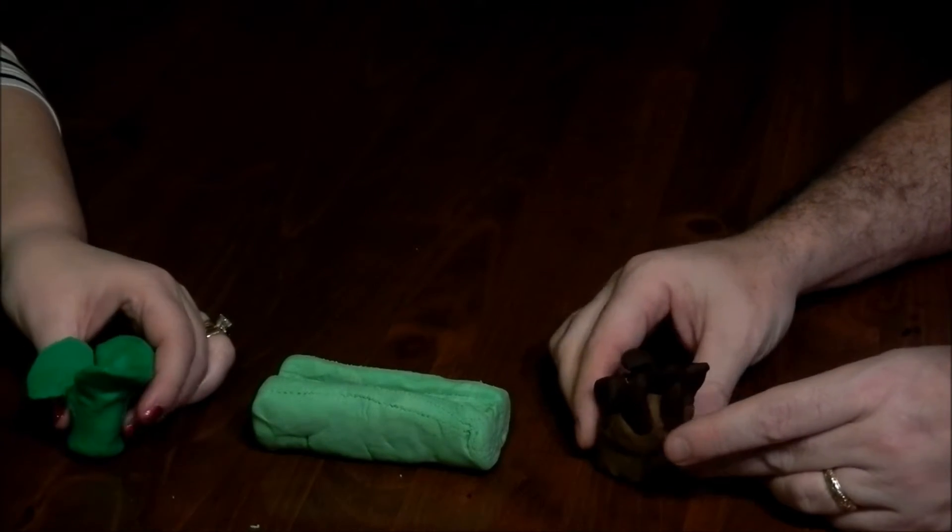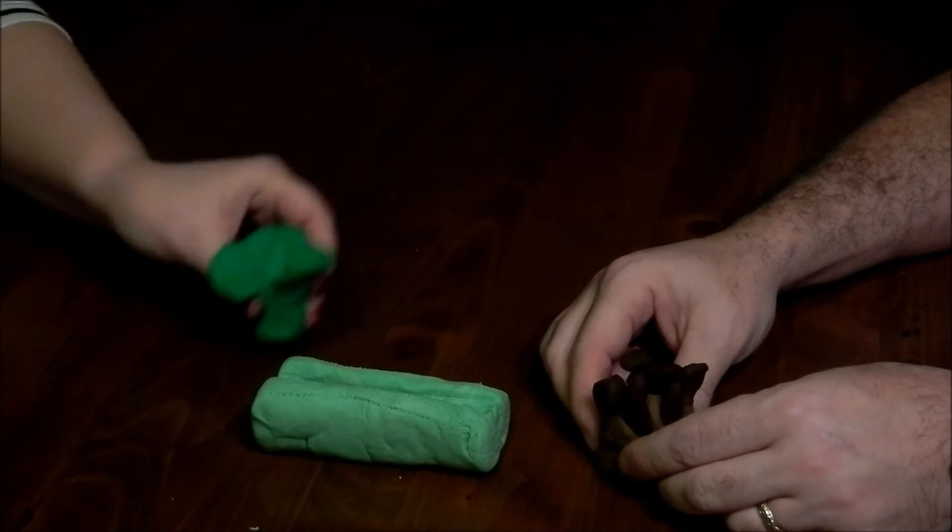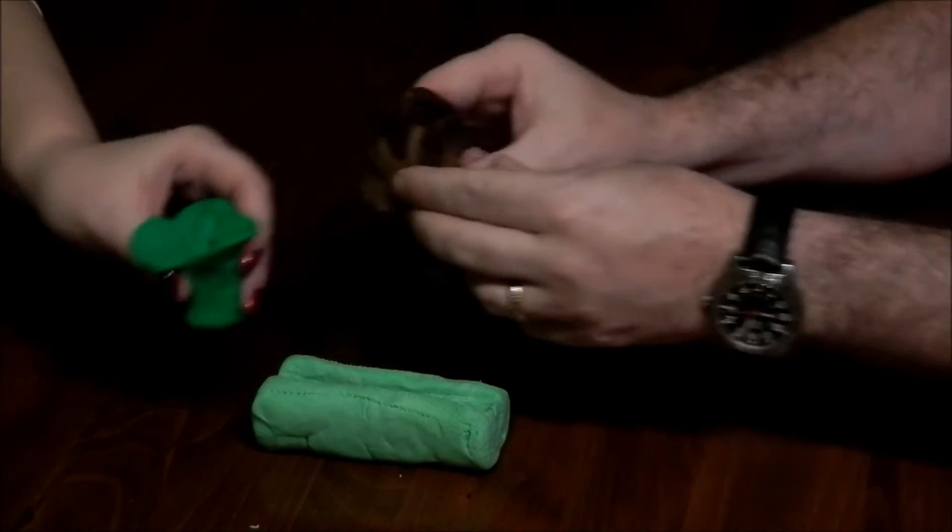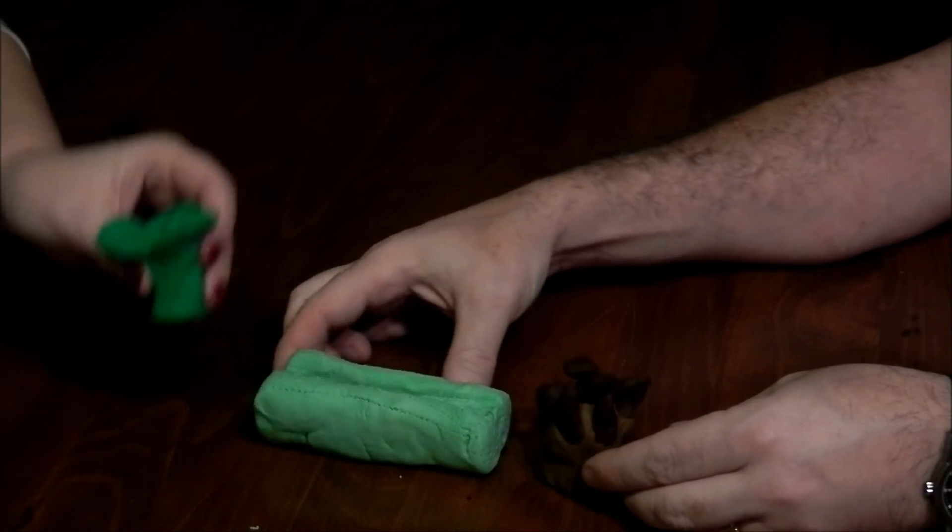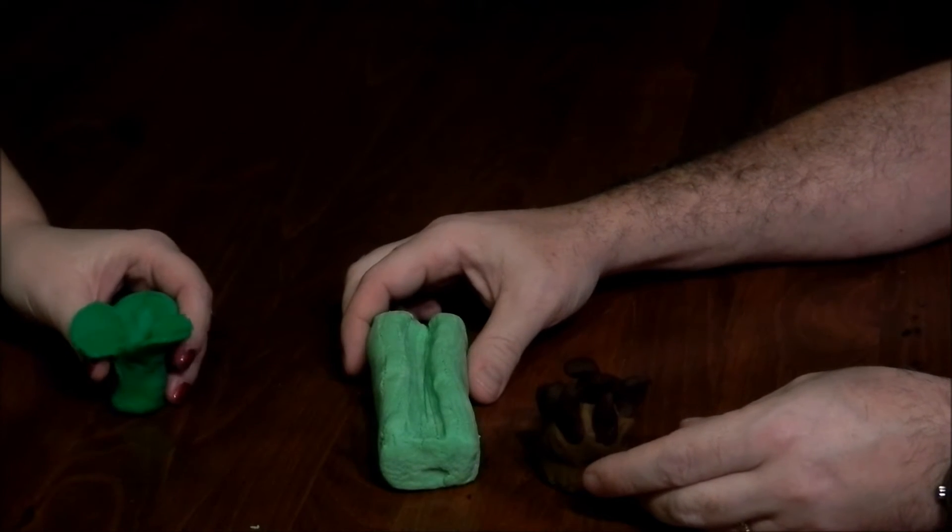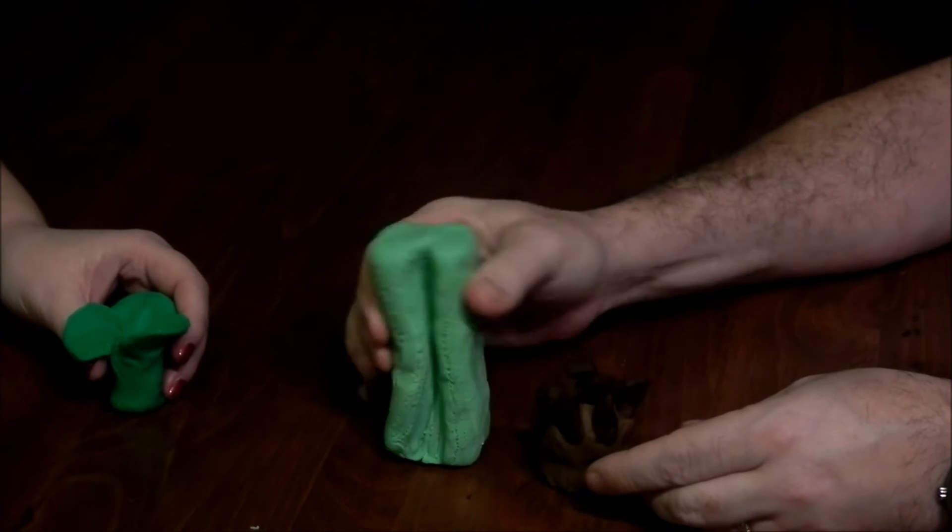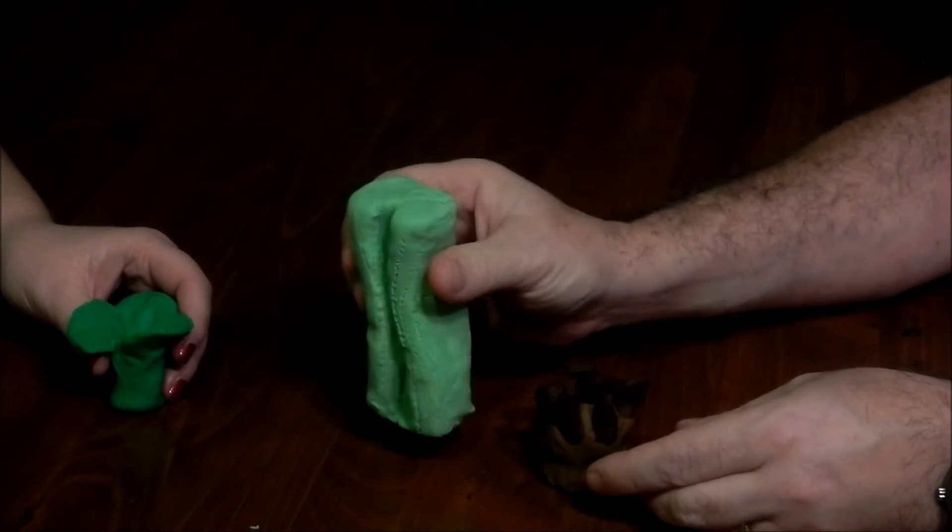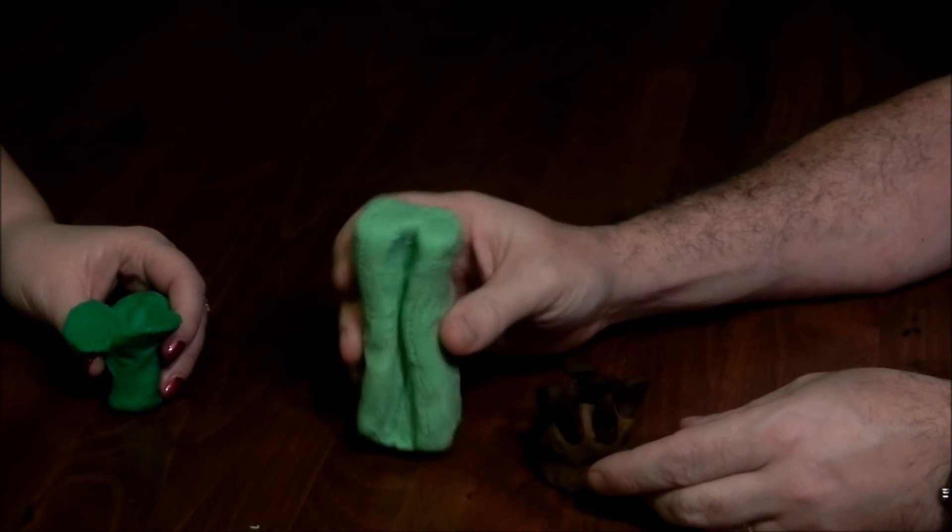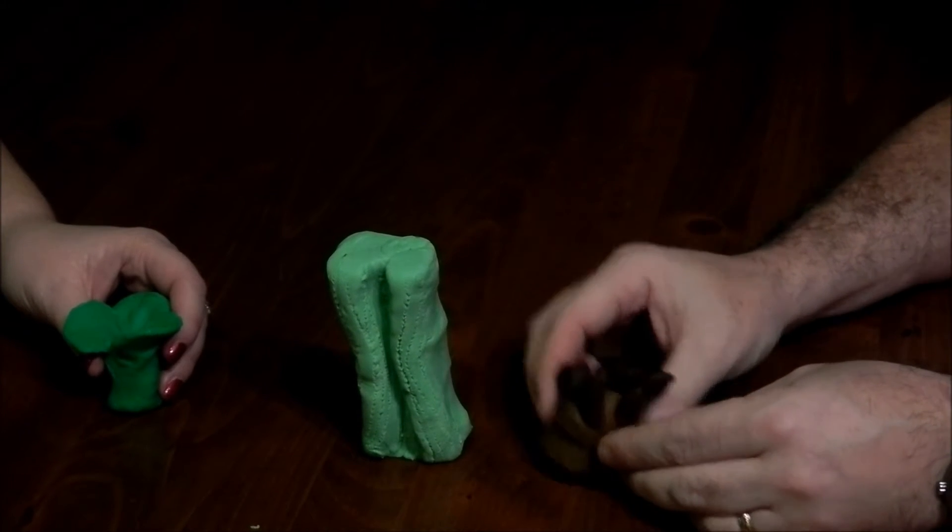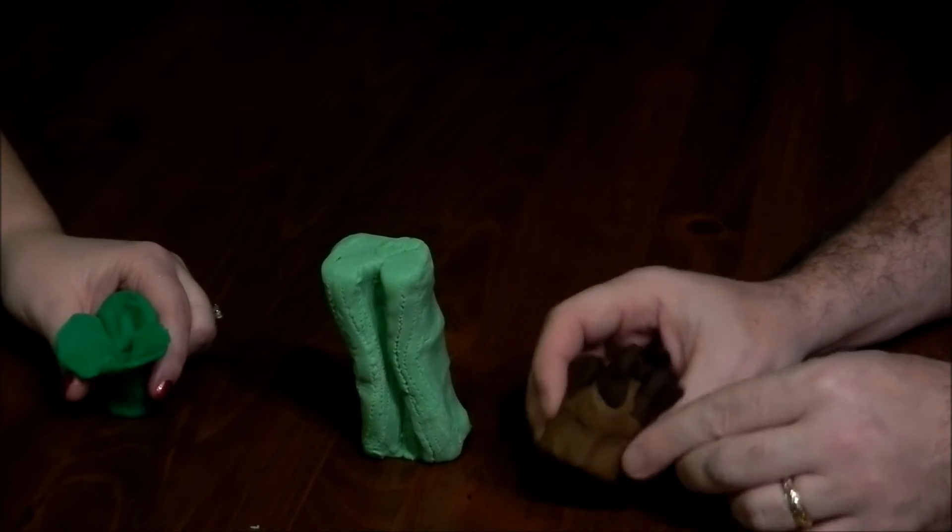And in this corner, weighing in at 3 grams, the leaves! And in this corner, weighing in at a whopping 5 grams, the stalk! And in this corner, weighing in at 2 grams, the roots!